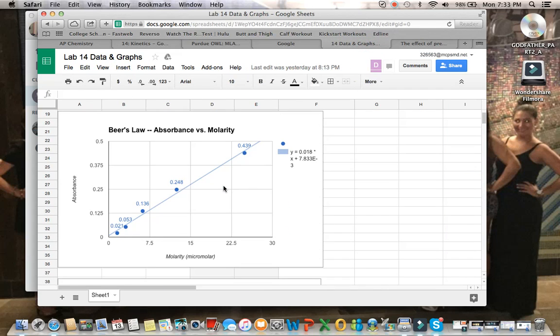Our Beer's Law absorbance versus molarity plot looked like this. As you can see, the trendline equation it gave us here gives you an x, which is what you use as the molarity that you can solve for, and then becomes vital as the translator for the further parts of the lab.